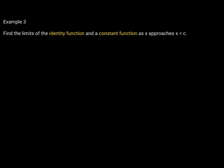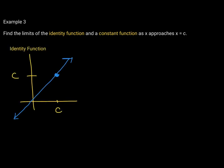Next, let's find the limit of the identity function and a constant function as x approaches some value c. The identity function is f(x) = x. For any point on its graph, the x and y coordinates are the same — points like (1,1), (2,2), (3,3), (-1,-1). It's a line with slope 1 through the origin. As x values get closer and closer to c from both sides, your function values are approaching c as well, for any real number c. So the limit of the identity function as x approaches c is c.